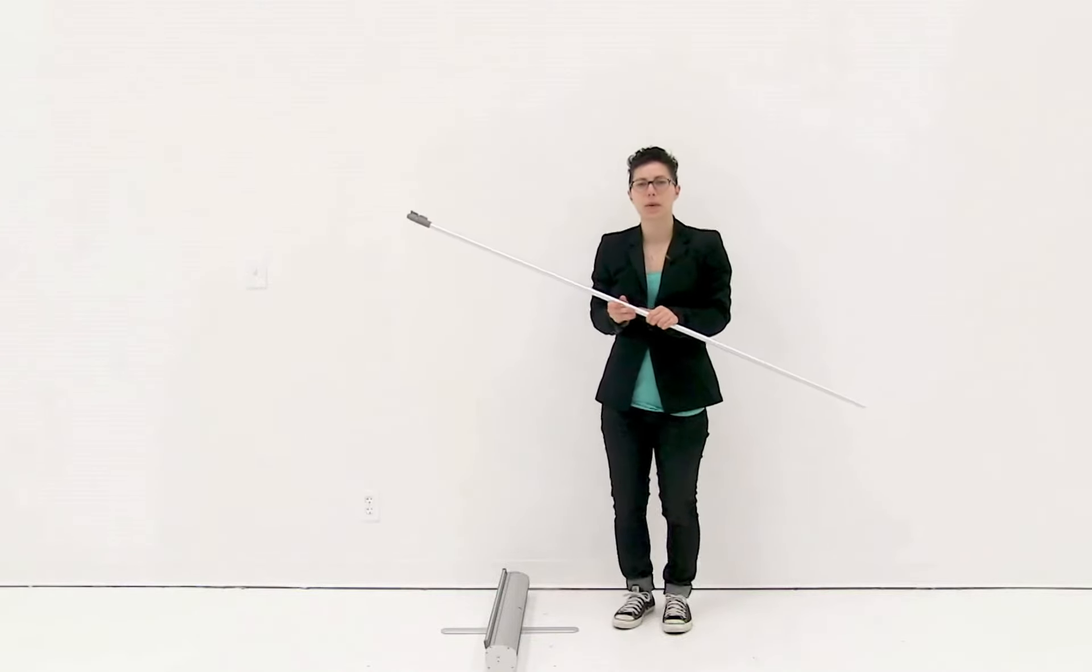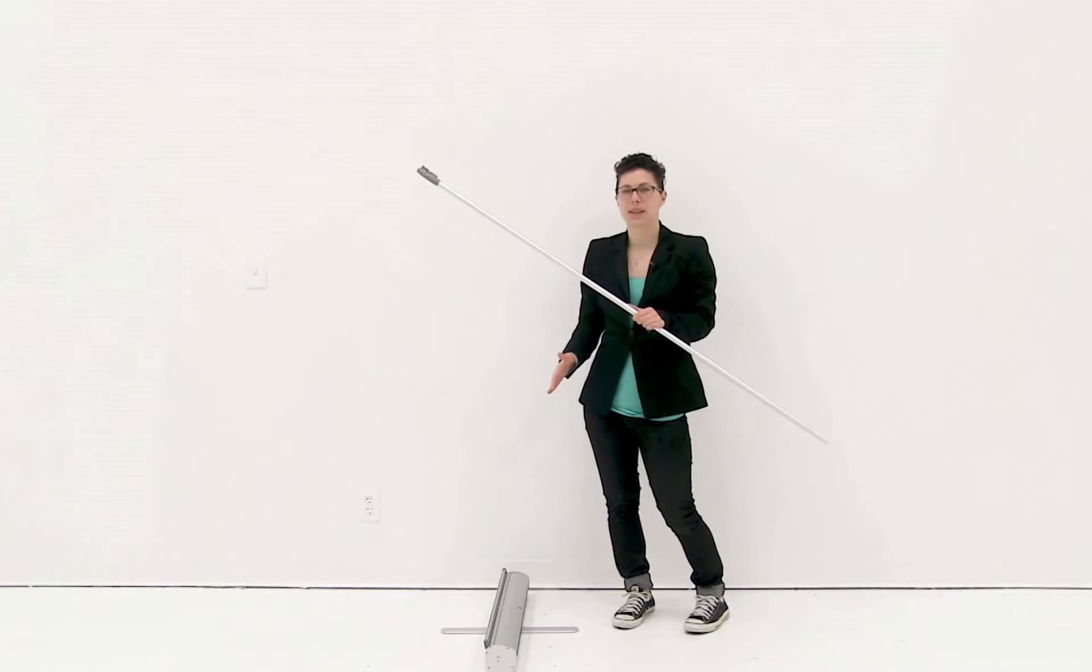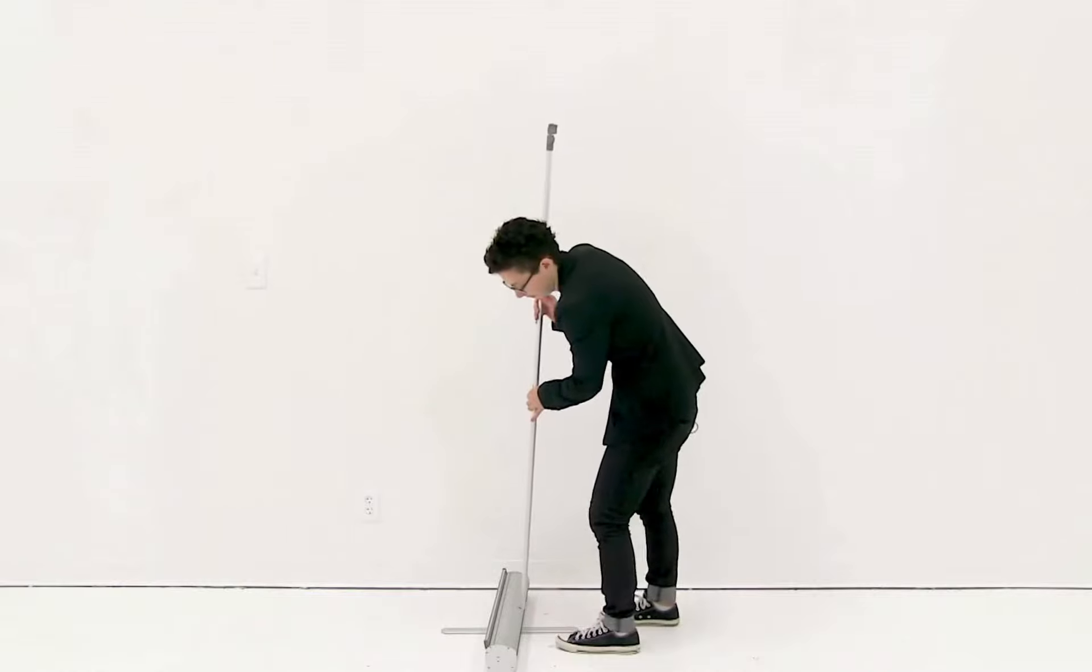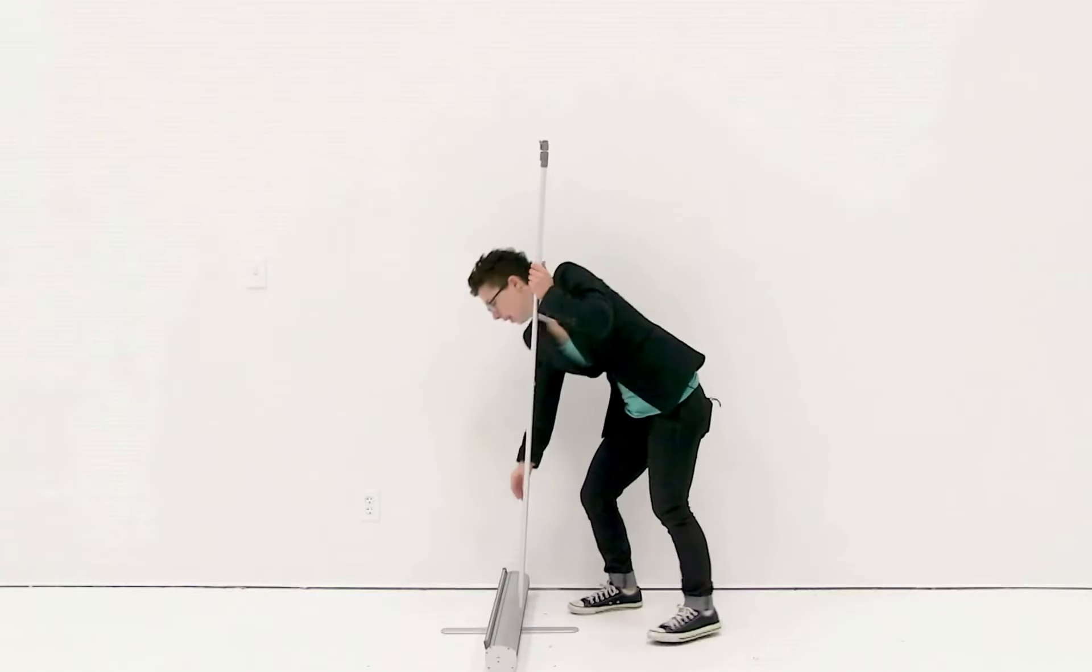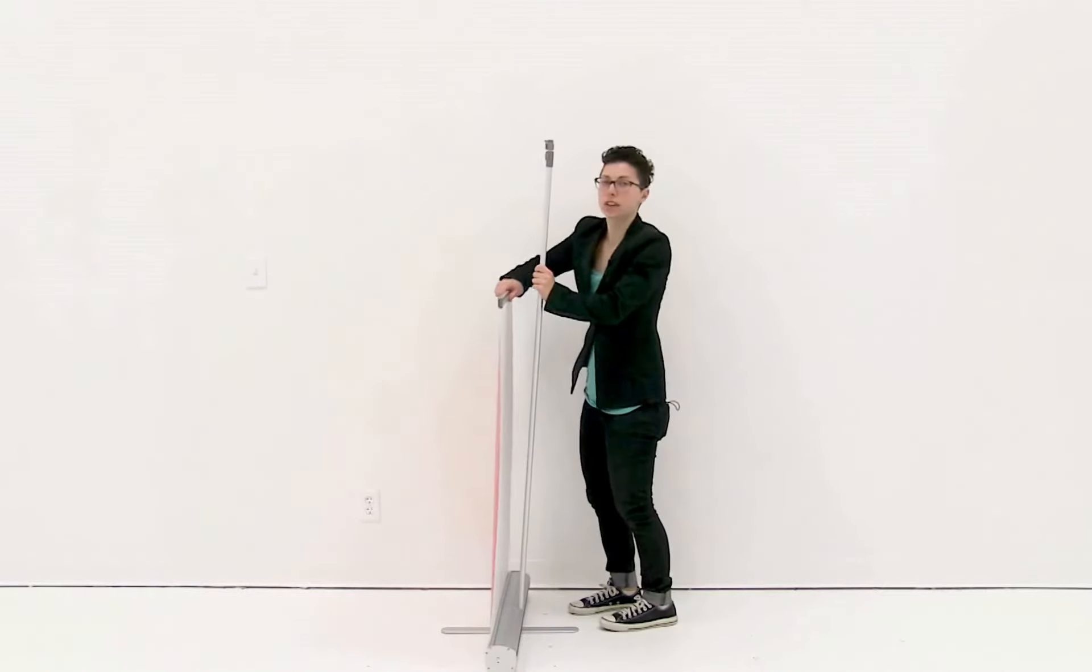Next, I'm going to insert the pole into the hole located on the back of the base, and then I'm just going to pull up on the snap rail and attach it to the hook on the top of the pole.